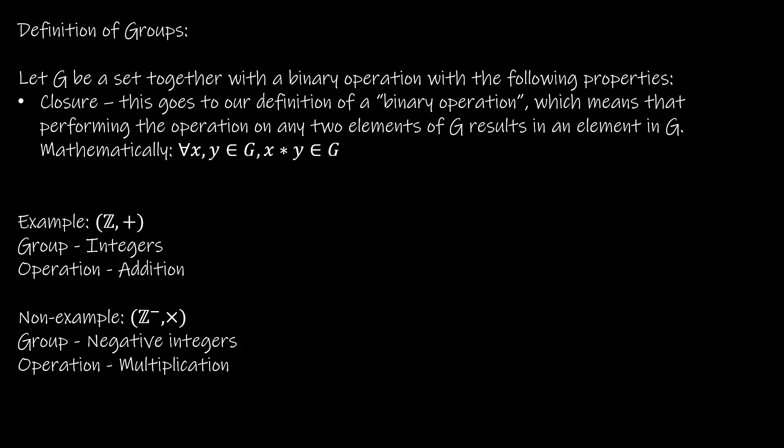Let's take a look at our first property, the property of closure. If you are using the Gallian text, Gallian does not do a great job of making it clear that closure is something that should be checked or verified as you are proving something is a group. They do talk about a binary operation, and by definition, a binary operation is closed, but it's not sufficient to just say this is a binary operation. You actually have to show that your group is closed. What it means to be closed is that you can take two elements from your set, perform that binary operation on them, and the result should be an element in that set.